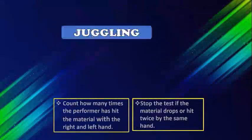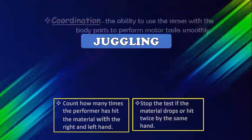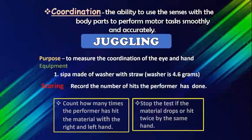The first activity in the skill-related fitness is jabbing, to measure the body's coordination. Record only the number of proper hits.